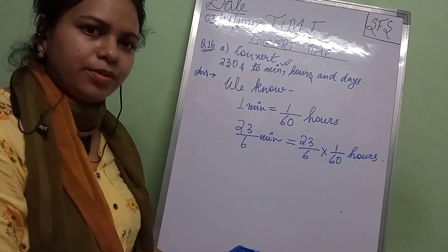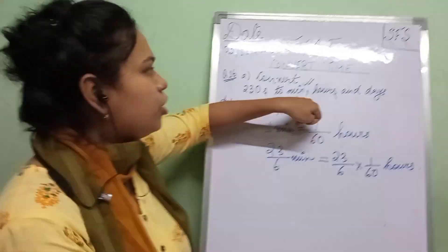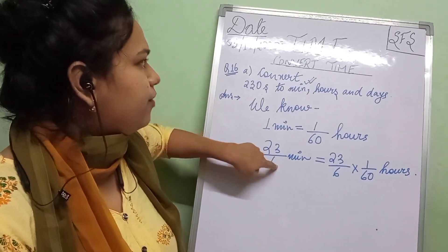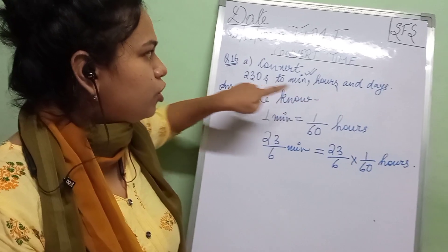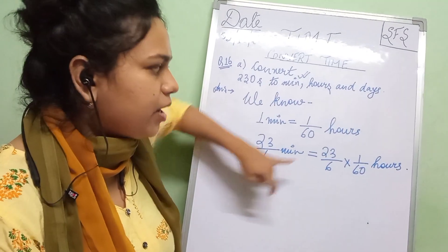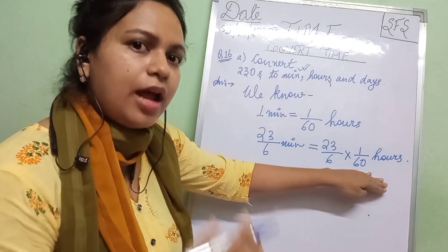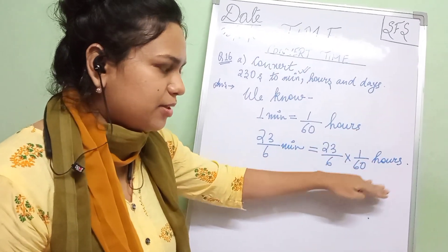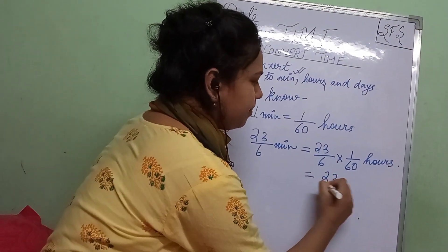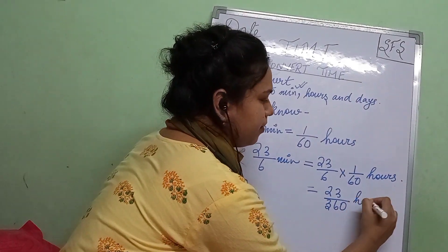At first we converted 230 seconds into minutes — 230 seconds was equal to 23 by 6 minutes. Now we are converting into hours. Since minute is a smaller unit of time and hour is a larger unit of time, we divided by 60. So this will be equal to 23 by 6, and 6 multiplied by 6 is 36, giving us 23 by 360 hours.